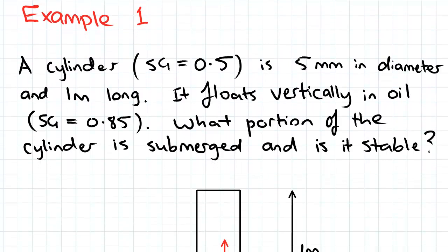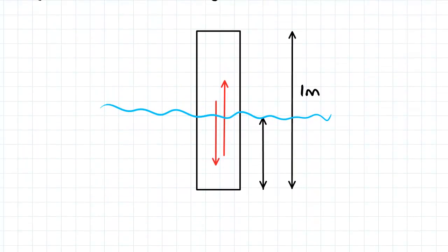So here we've got a cylinder, it's a metre long, five millimetres in diameter. It floats vertically in oil and we've been asked to find what portion of the cylinder is submerged and whether or not it is stable.